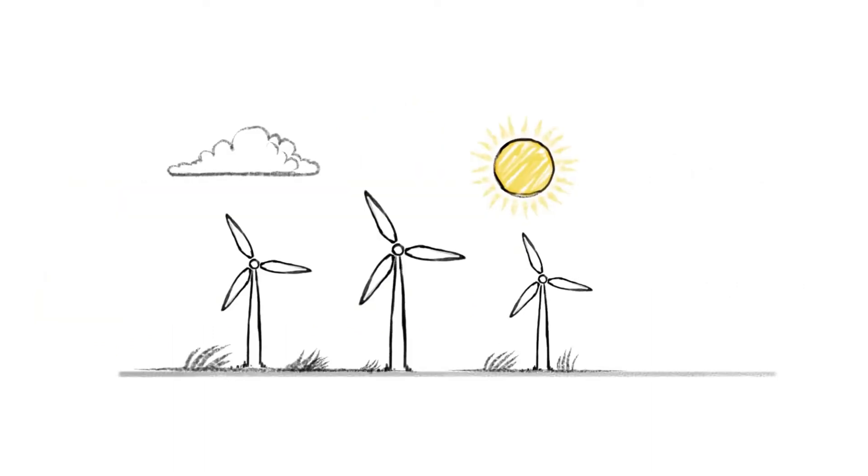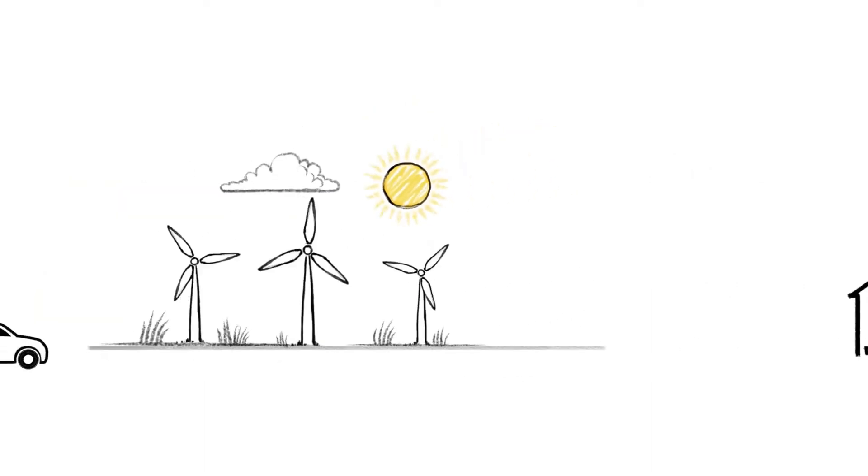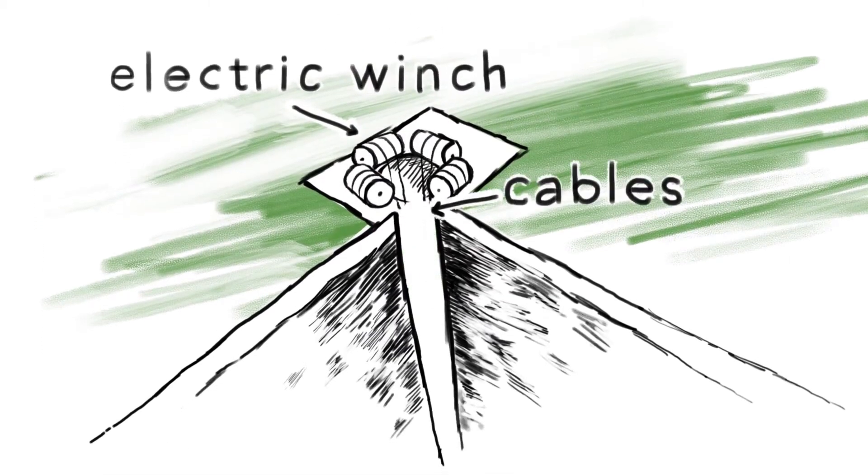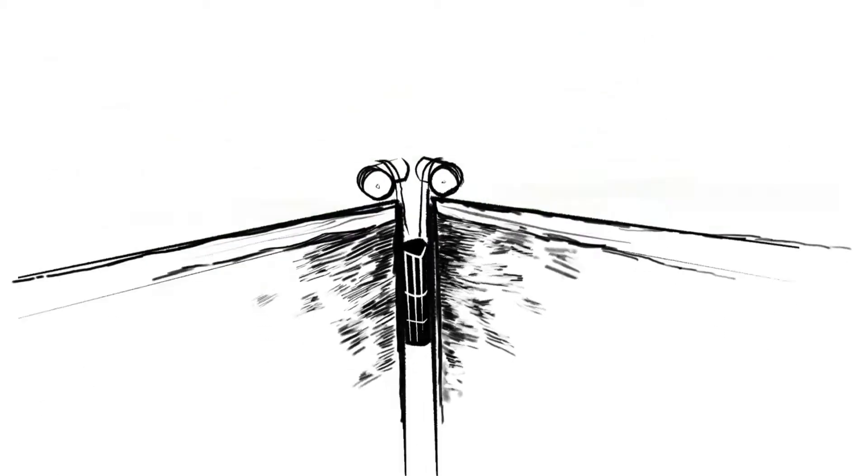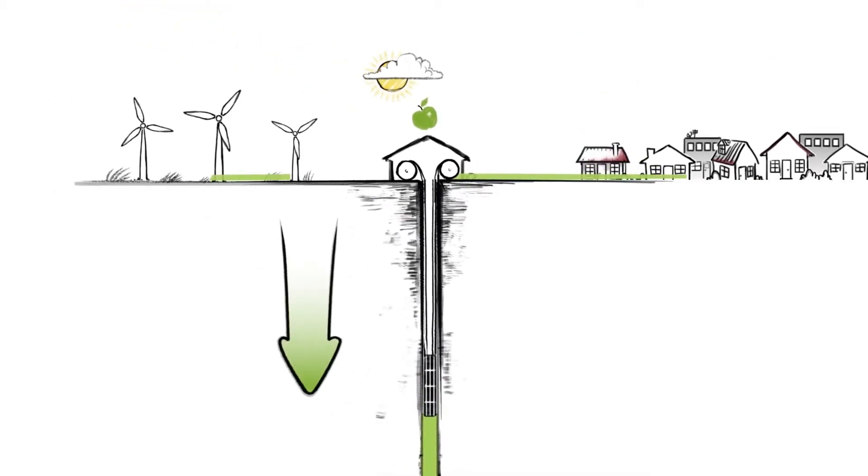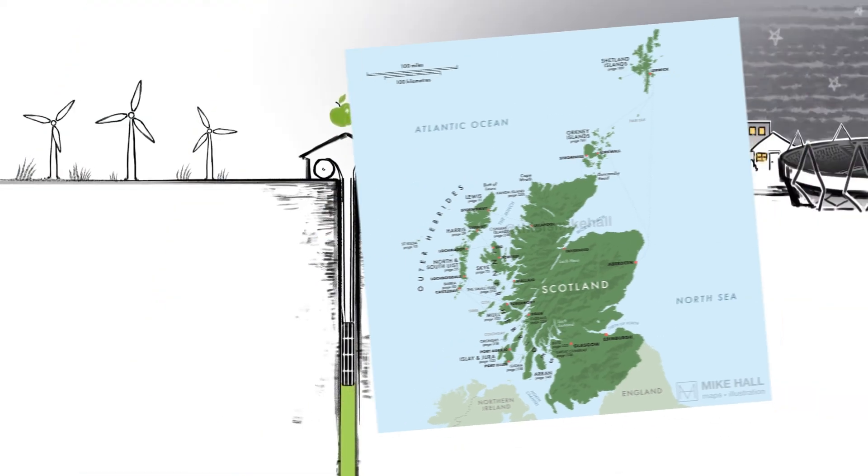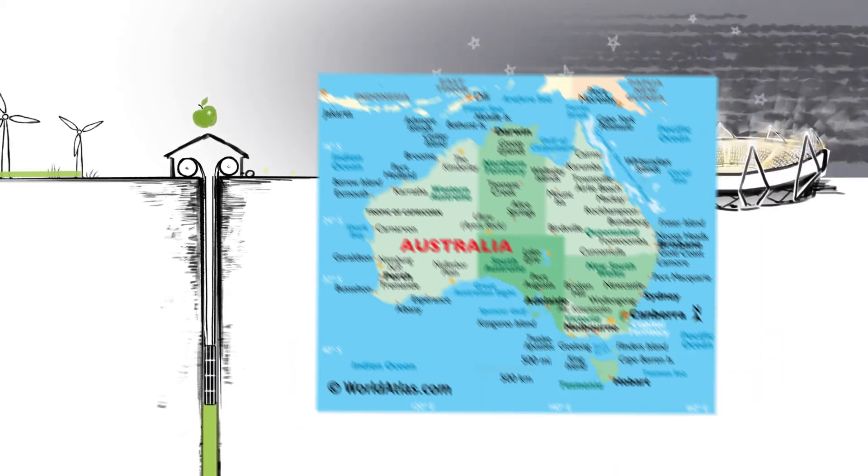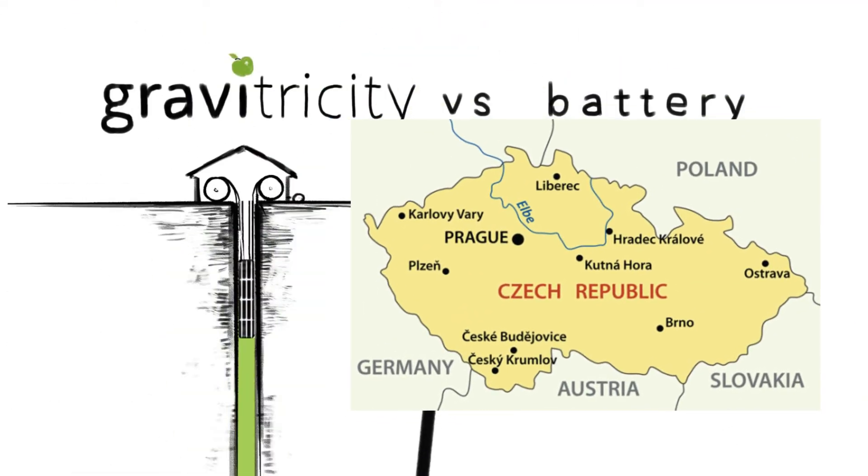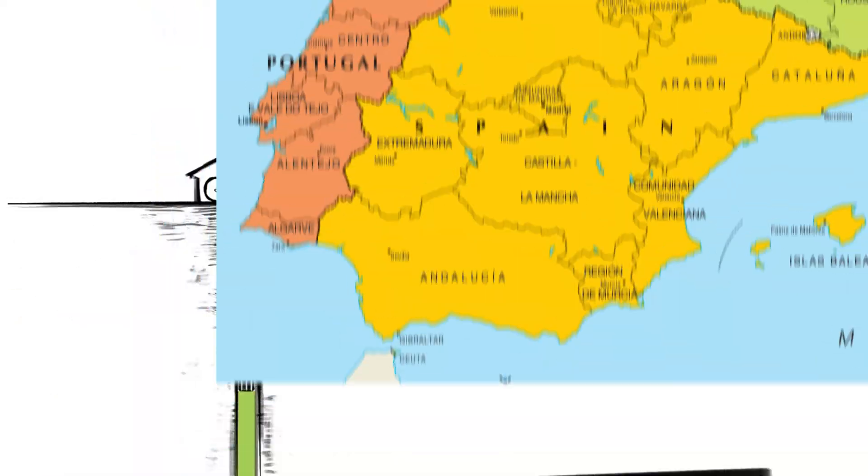Gravitricity is a UK company that uses winches to lift and lower steel weights in disused mine shafts. The company claims that its system can store up to 20 MWh of energy with an efficiency of 90%. In 2021, it tested its first prototype in Scotland and plans to build more projects in South Africa, Australia, Poland, Finland, Czech Republic, Chile, Canada, Germany, France, Spain, and Portugal.